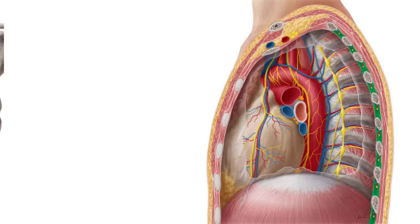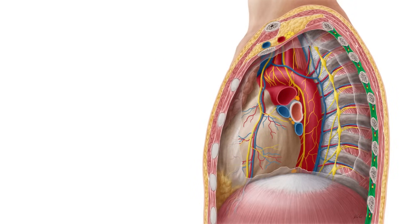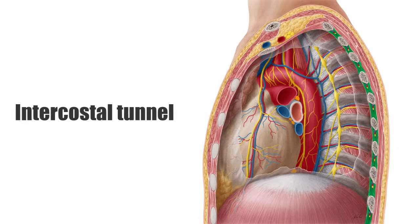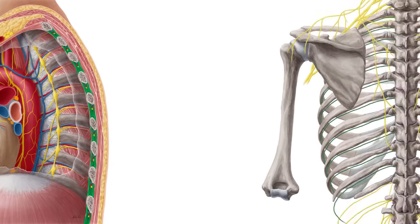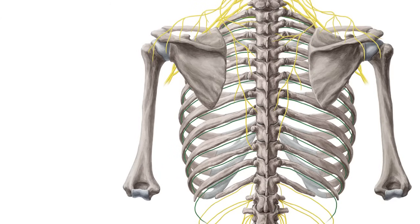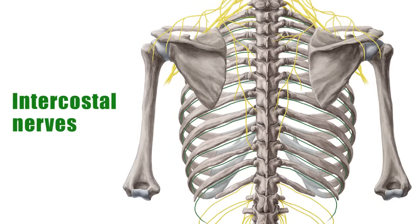The fibrous space between the internal and innermost intercostal muscles and the lower border of the rib above forms the intercostal tunnel. These tunnels provide passage for the intercostal arteries, veins, and the intercostal nerves, which supply the intercostals and arise from the thoracic nerves.